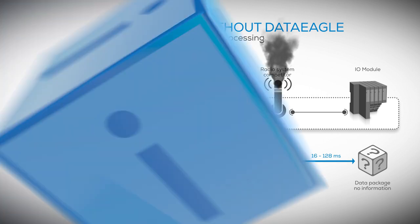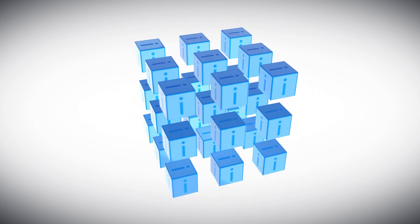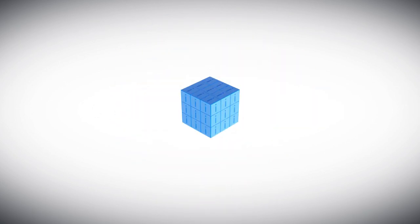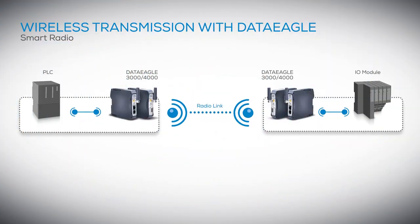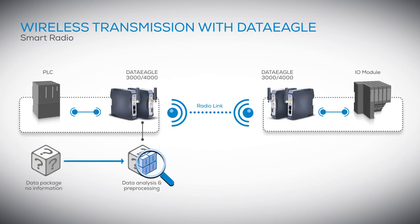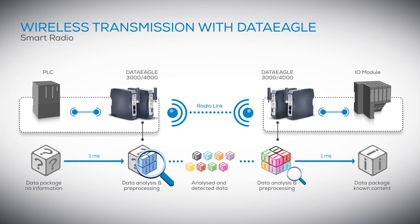DataEagle works in a very different way. Our intelligent radio system performs a patented pre-processing of the data. The radio data is analyzed and buffered by various patented algorithms for redundancy, timestamp, and telegram content. Therefore, the data actualization rate at the PLC remains one millisecond.